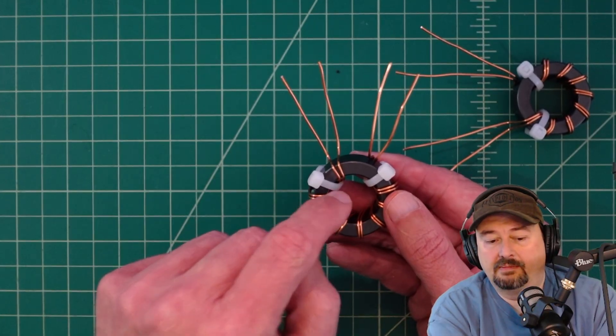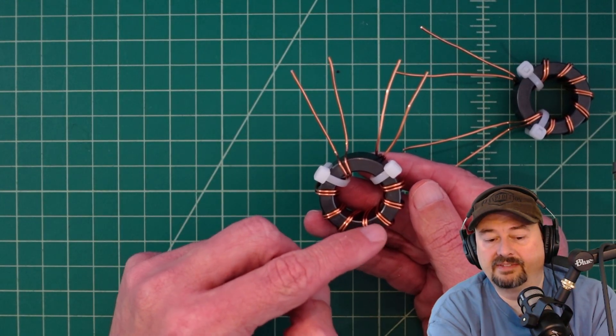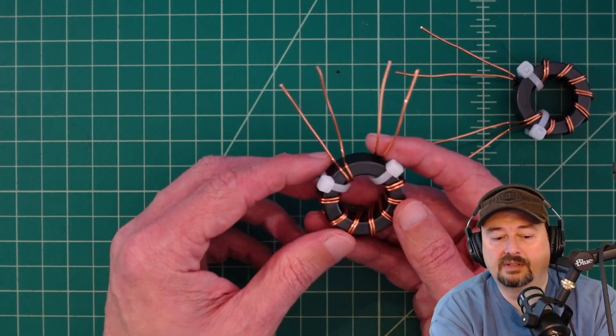To count a wrap it's every time the wire goes through the center of the core. You got one, two, three, four, five, six, seven, eight. So that would be eight windings.